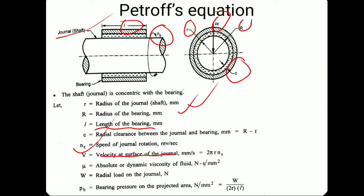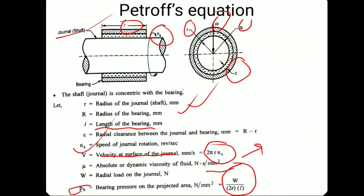ns is the speed of the journal. v is the pitch line velocity at the circular surface, given by 2πr·ns. Absolute viscosity μ is in Newton·second per mm². w is the radial load. p_b is the bearing pressure — the pressure sustained by the bearing due to shaft rotation — calculated as load divided by area: w divided by 2r·l. I hope you understood these terminologies.